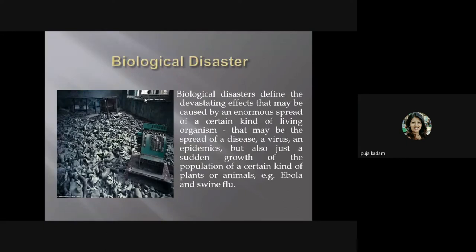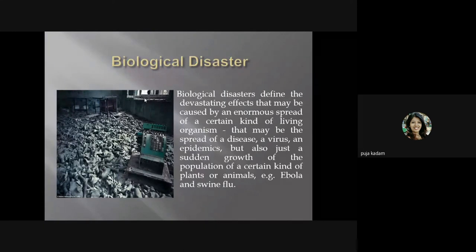Biological disasters are defined by the devastating effects caused by the enormous spread of a certain living organism — such as the spread of a disease, virus, or epidemic, or even a sudden population growth of certain plants or animals. Examples include Ebola and COVID-19, which is the biological disaster we are currently experiencing due to a virus. Similar examples include swine flu and other epidemics spread by viruses and bacteria.